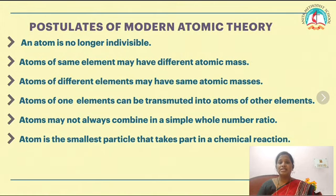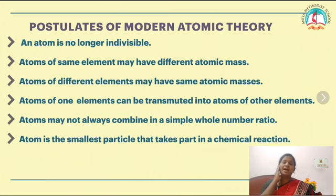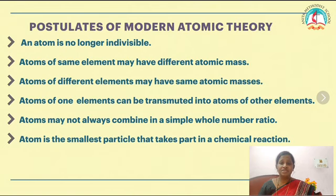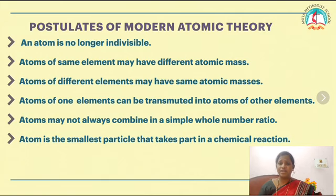Isobars are examples of atoms with different atomic number but the same mass number. Atoms of one element can be transmitted into atoms of another element by a process called artificial transmutation. Also, atoms are not always combined in a simple ratio. An atom is the smallest particle which can take part in all chemical reactions.